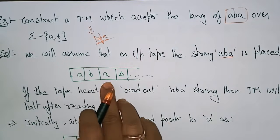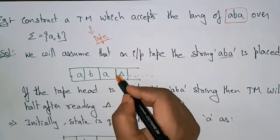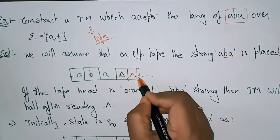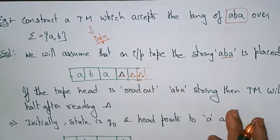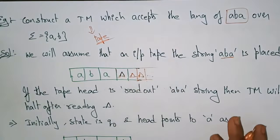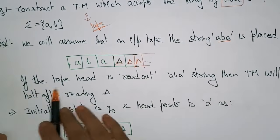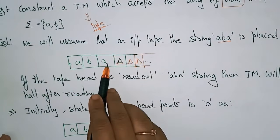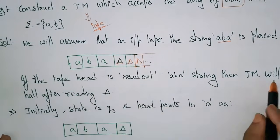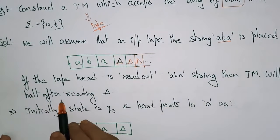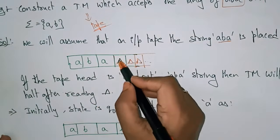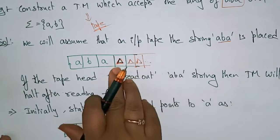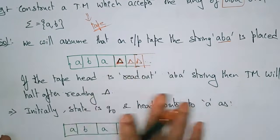So ABA is placed on the tape. After that, you have to place the blank symbol. Whenever the tape head reads the blank symbol (delta), the Turing machine will halt — indicating it has read the complete data.